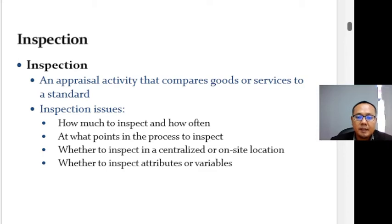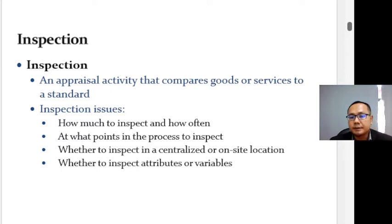The basic issues of inspection include: how much to inspect and how often, at what point in the process inspection should occur, whether to inspect in a centralized or on-site location, and whether to inspect attributes — counting the number of times something occurs — or variables.